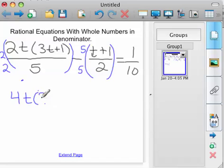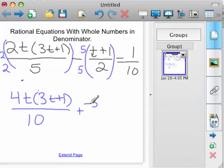4t times 3t plus 1 over 10, minus—or plus a negative 5—and then t plus 1 over 10. Changing the subtraction to addition here and changing the sign to the right, and then equals 1 tenth.